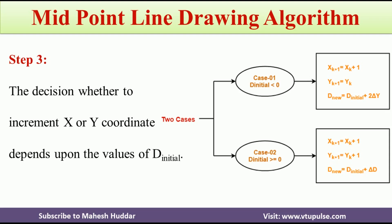So these are the three equations used to calculate the new D new, that is a new initial decision variable, and new point XK plus one and YK plus one.